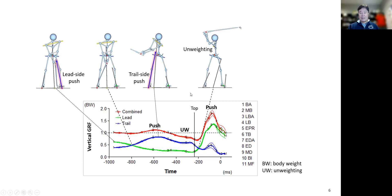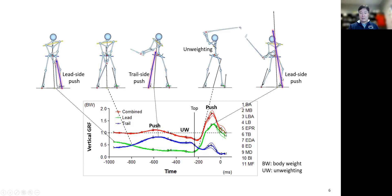During the downswing, we have a hard push from the lead side — this force is even greater than the body weight. The force acting on the lead side alone is greater than the body weight, and overall this is about 1.85 times the body weight, with the majority coming from the lead.